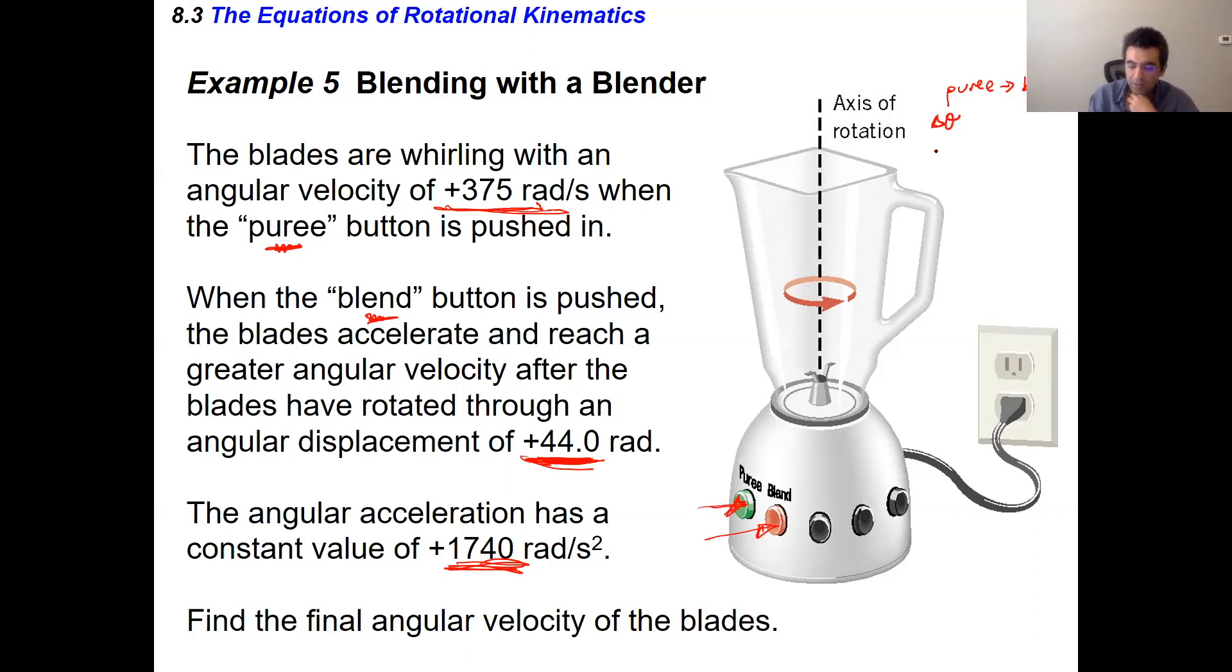My kinematic variables are the angular displacement, the initial angular velocity, the final angular velocity, the acceleration, and the time during that segment of motion. There were 44 radians positive, meaning counterclockwise. The angular velocity I started with is at the beginning—that's puree, so that's 375 rad/s. The final angular velocity is what I'm looking for. The angular acceleration is given to me—it's constant at 1740 rad/s². And the time I don't know, and frankly I don't really care about the time at this point. So I have three variables that I know, so I can find the fourth one.